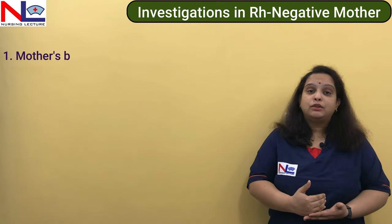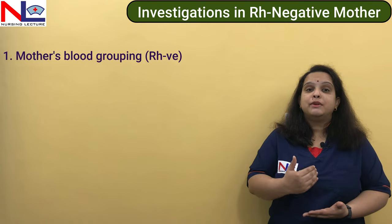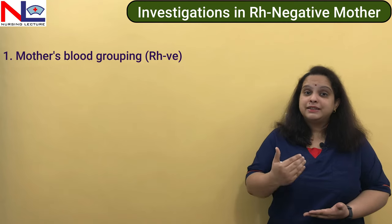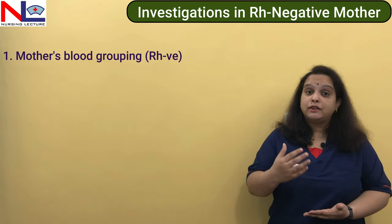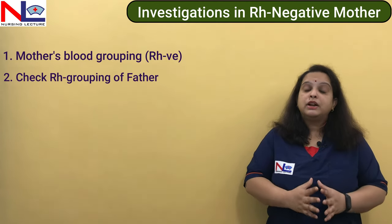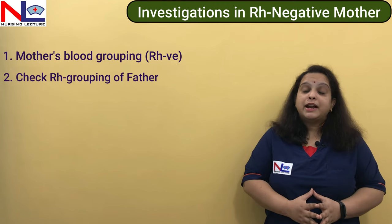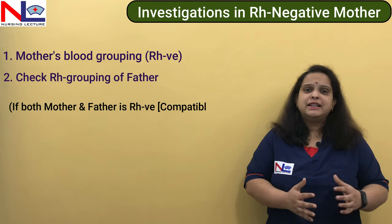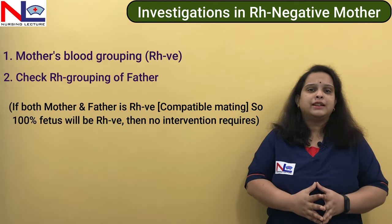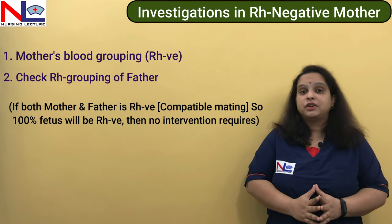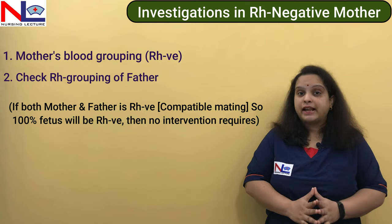The basic step is that we must collect the blood group — the blood typing of the woman must be confirmed beforehand. If the mother is negative, once in the antenatal period we confirm she is negative. At that moment, we must also take a blood sample from the father to confirm his blood group and typing. Because if the father is also negative, both are compatible, the fetus will 100% be negative, and incompatibility never arises.